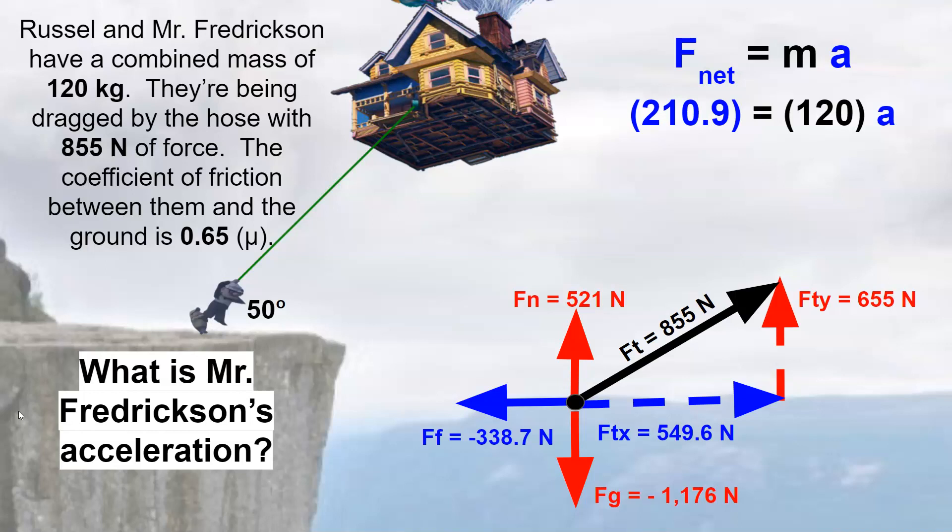The net force is 210.9. Remember, that represents how much bigger the force pulling to the right is than the left. If you look, 549.6 is 210.9 bigger than negative 338.7.